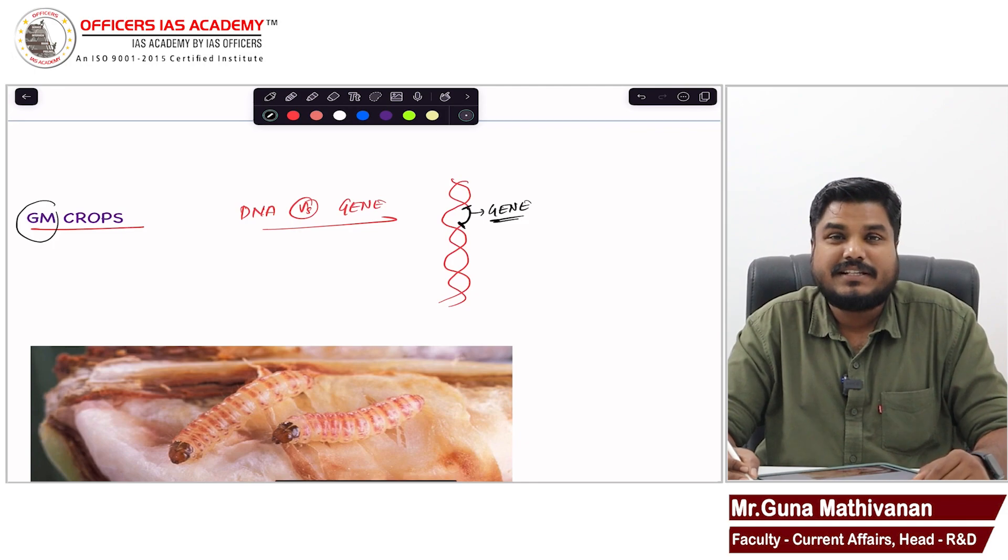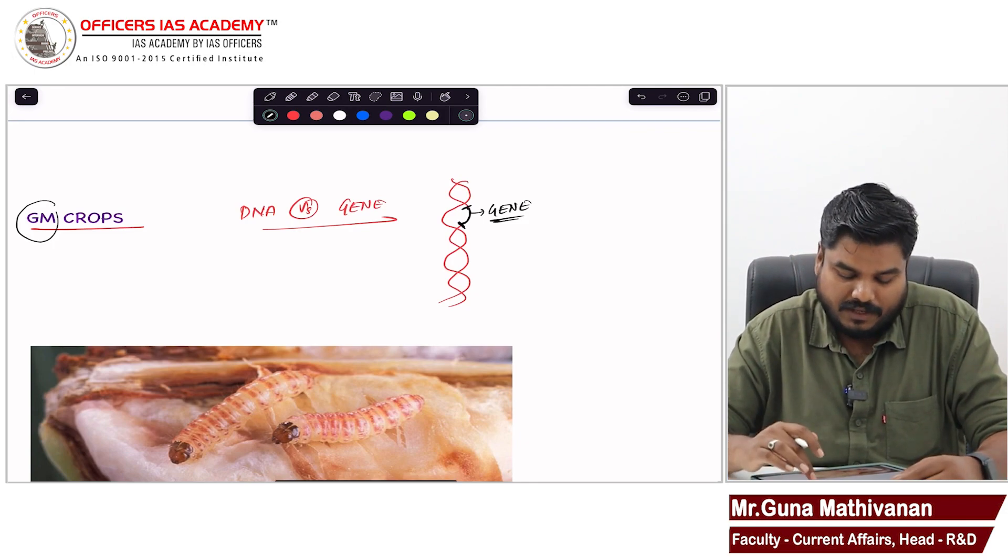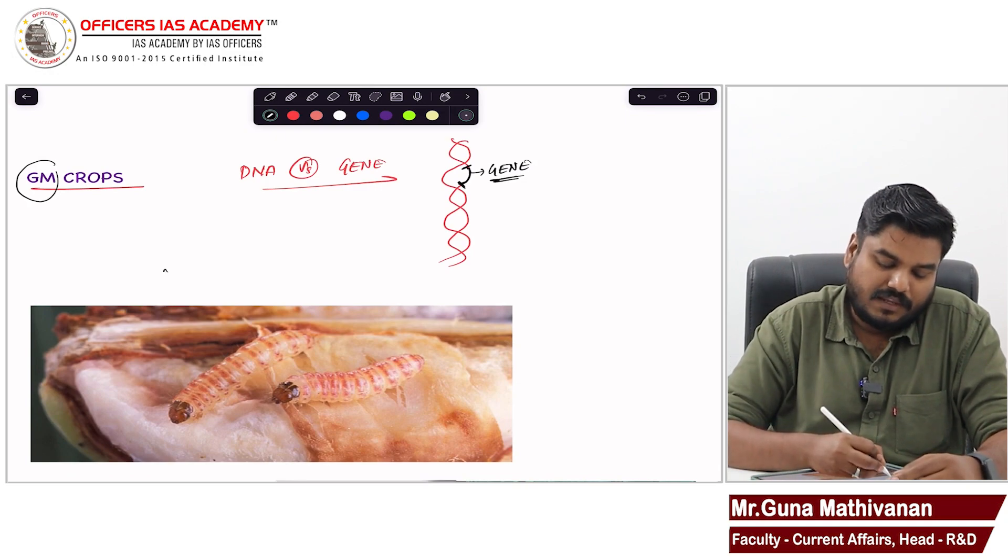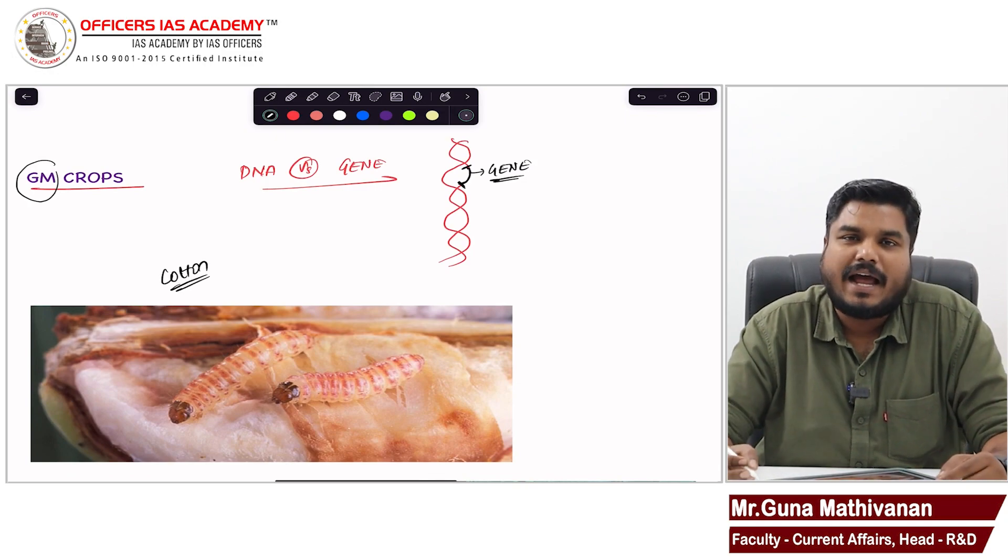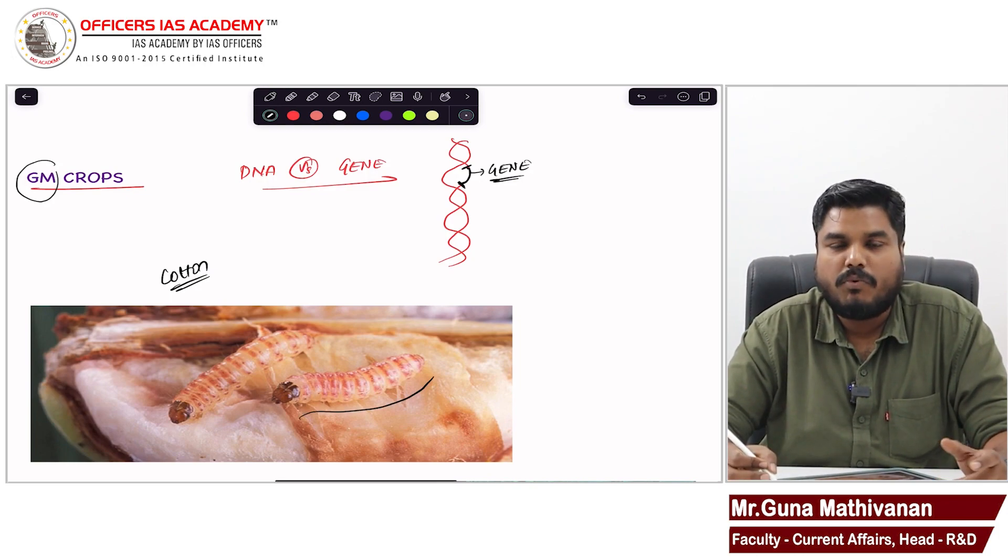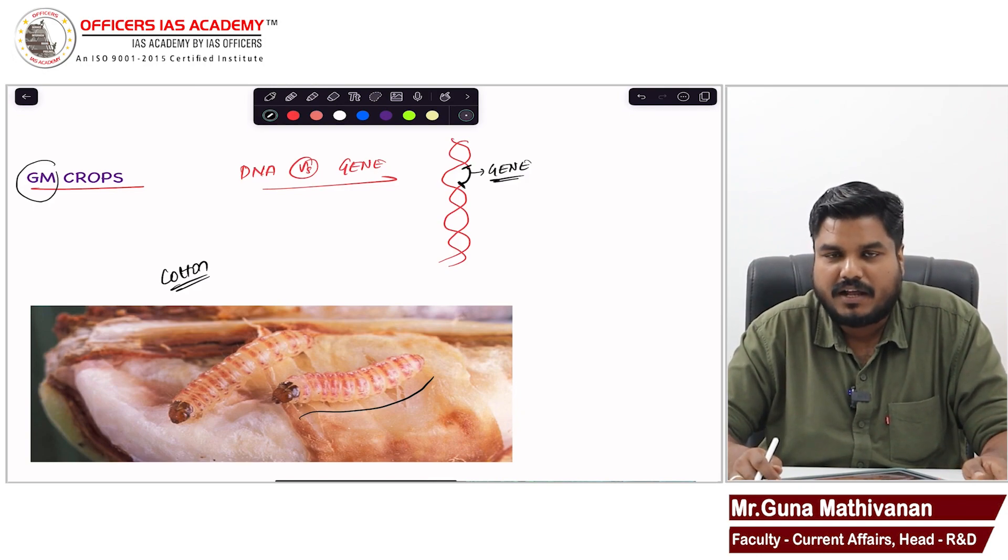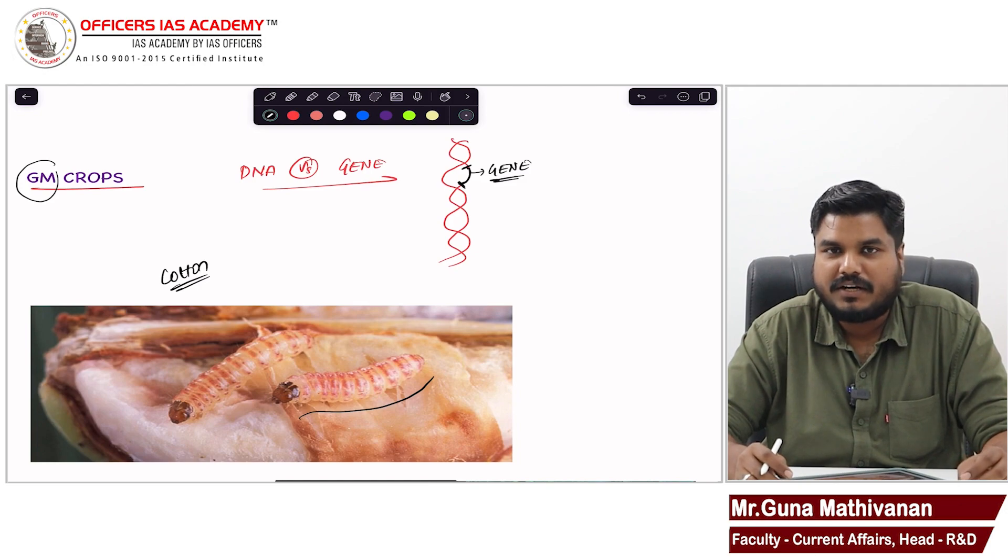Now what is this genetic modification? Let me explain genetic modification with a real example. See this cotton plant, they face attack from a worm called pink bollworm. That usually attacks the cotton plant and it damages the cotton in great quantity. So it puts the farmers under distress.